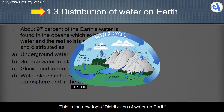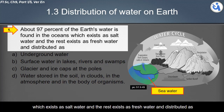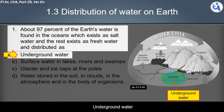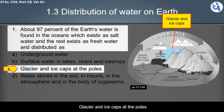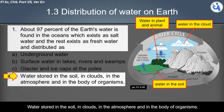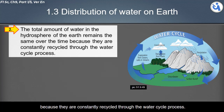About 97 percent of the Earth's water is found in the oceans as salt water. The rest exists as fresh water distributed as underground water, surface water in lakes, rivers and swamps, glaciers and ice caps at the poles, water stored in soil, clouds, the atmosphere, and in the bodies of organisms. The total amount of water in the hydrosphere remains the same over time, as it is constantly recycled through the water cycle process.